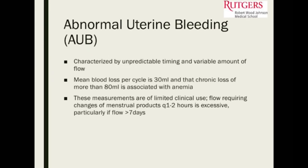Abnormal uterine bleeding is characterized by unpredictable timing and variable amount of flow. Average blood loss is about 30 cc's, and chronic loss of more than 80 cc's is considered abnormal — but it's really hard for a patient to tell you how many cc's she bleeds. The better question is how many pads or tampons she changes in a day. Changing more than once every one to two hours consistently is excessive, especially if the flow lasts more than seven days.